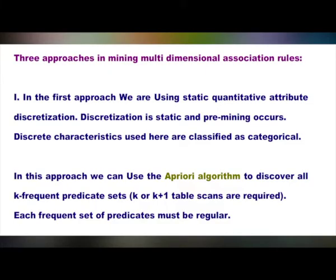There are three approaches in mining multidimensional association rules. In the first approach, we use static quantitative attribute discretization. Discretization is static and pre-mining occurs. Discrete characteristics used here are classified as categorical. In this approach, we can use the Apriori algorithm to discover all k frequent predicate sets. That is, k or k+1 table scans are required to do so, and each frequent set of predicates must be regular.